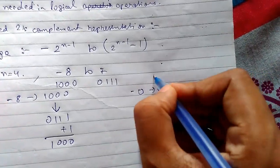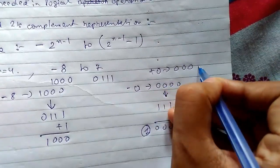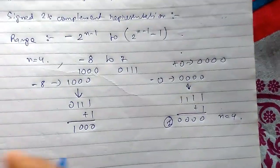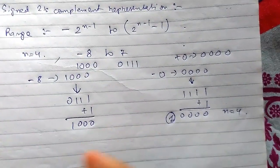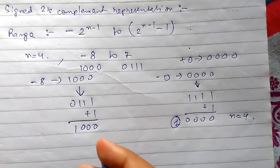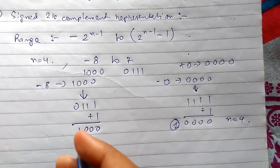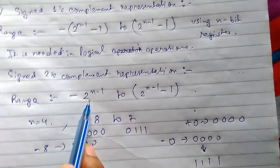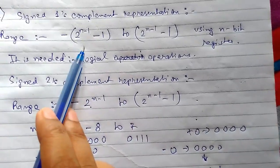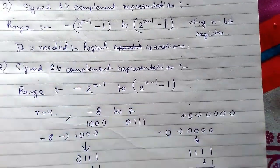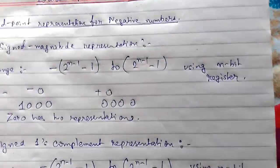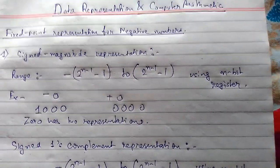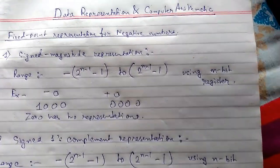For plus zero in a 4-bit register it is also zero, so zero has a single representation in two's complement. Negative numbers are represented using two's complement because zero has a single representation and the range is greater than one's complement. This was all about fixed point representation for negative numbers. Thanks for watching.